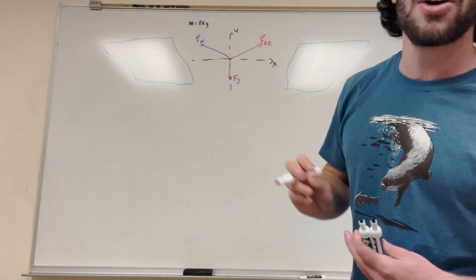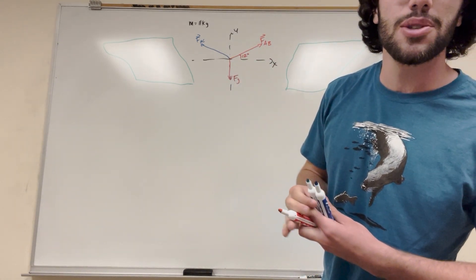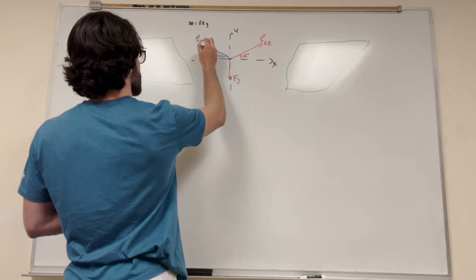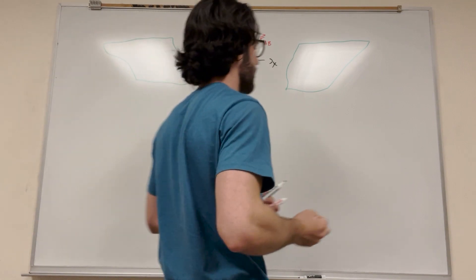So what angle do we know? We know that this is 12 degrees. We know that this is a 7-24-25 triangle. So this is 7-24-25. And force of gravity.